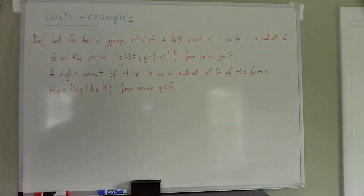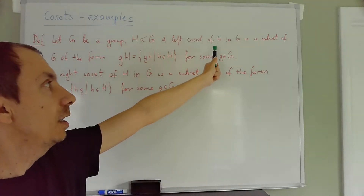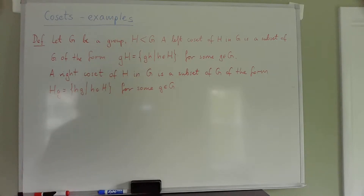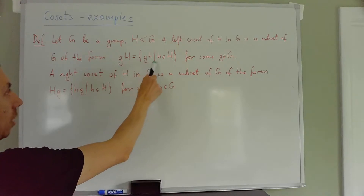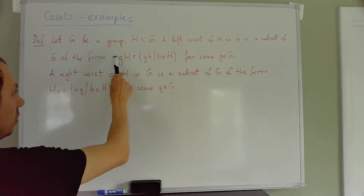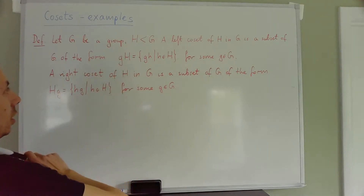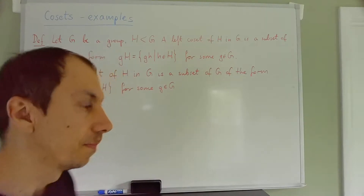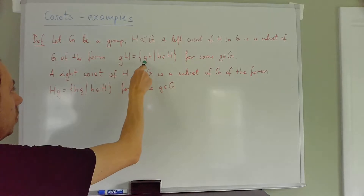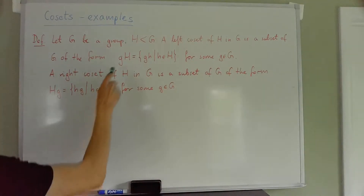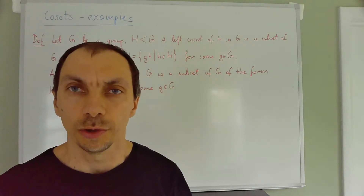Let G be any group and H be a subgroup of G. A left coset of H in G is a subset of G of the form gH, consisting of elements g times any h in H. It's called a left coset because g is on the left side of H. The group G need not be abelian, so it may matter on which side you place g. By changing g you might get a different left coset, or you might get the same one.